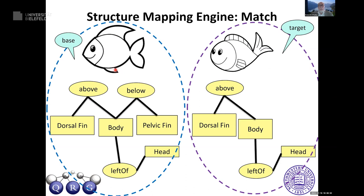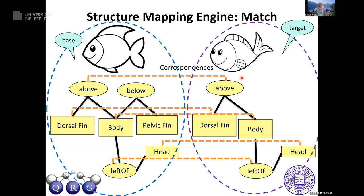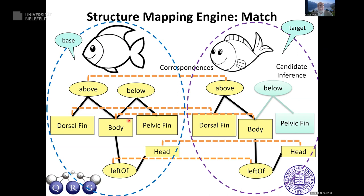SME works by finding local matches between relations, then using those to infer entity bindings. Graph matching is NP-complete — worst case factorial — but greedy middle-out is actually O(n² log n), which is a good approximation. Things connected to the mapping but not mapped become your candidate inferences, and you compute a similarity score. That's how SME works.